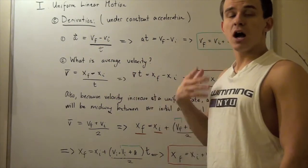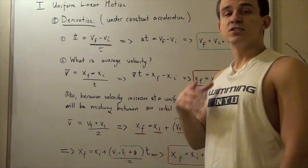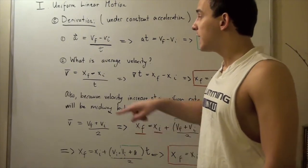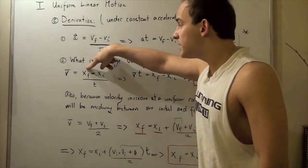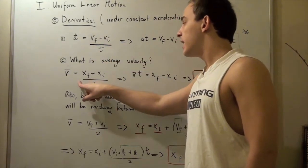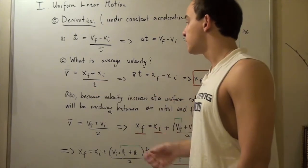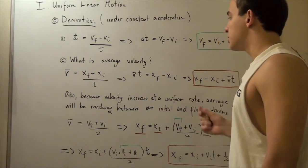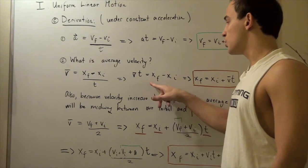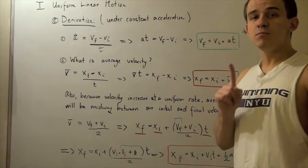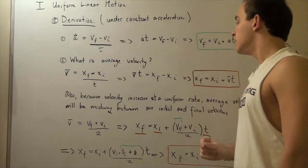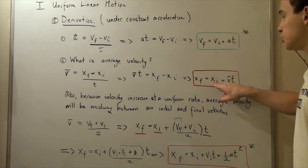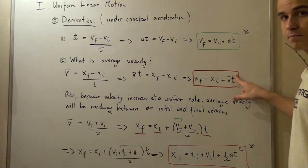Step two: what is the average velocity of our object? Velocity is a vector, and its formula is displacement divided by change in time. Average velocity — signified by v with a bar on top — equals our final position minus our initial position divided by elapsed time. Bringing time to the other side and then the initial position to the other side gives us: x final equals x initial plus average velocity times time.